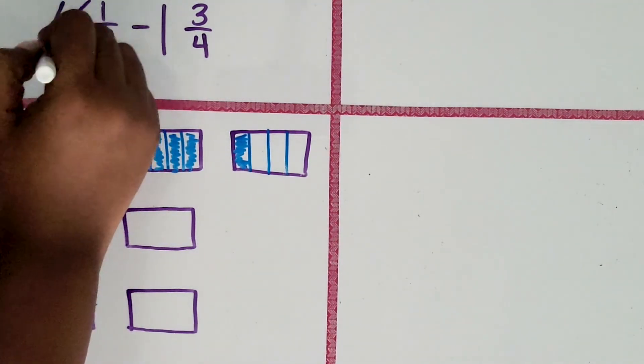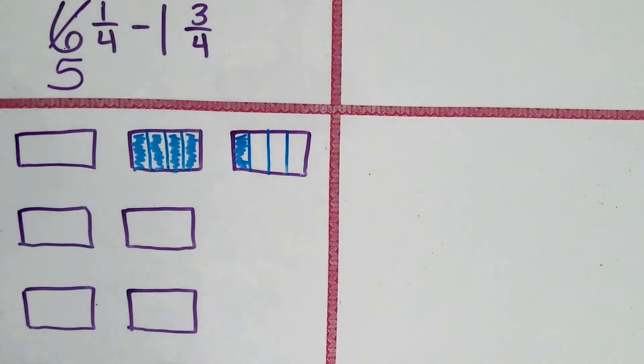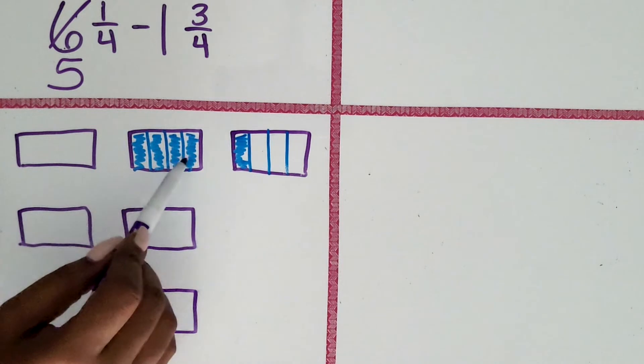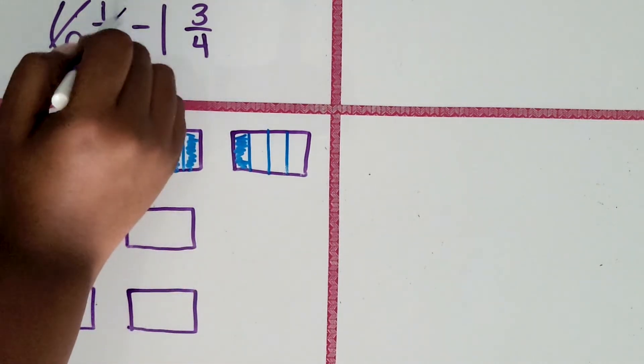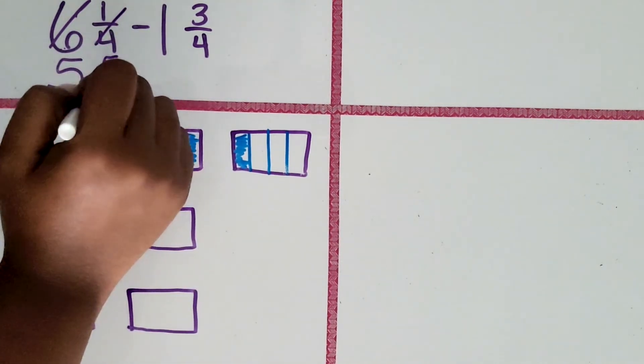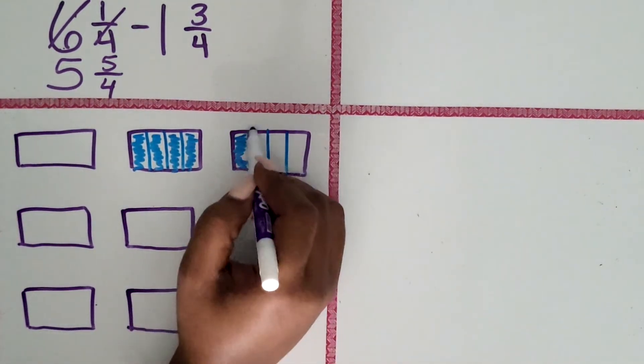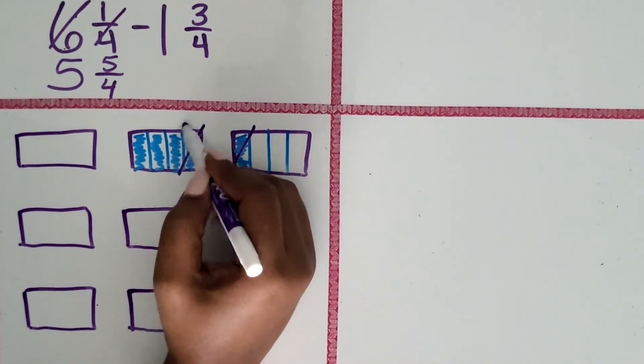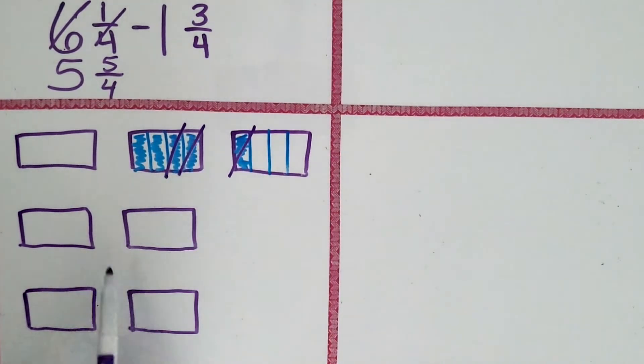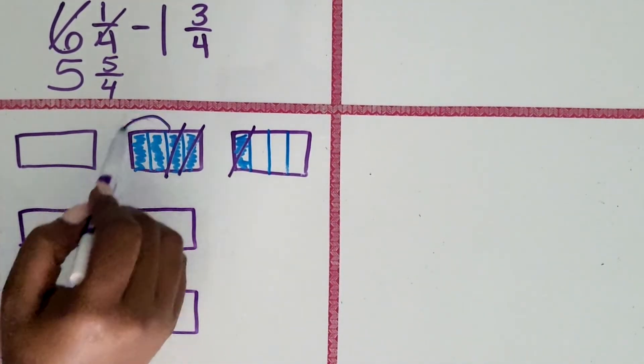Now we have five wholes and not one-fourth anymore. Now we have five of those fourth-sized pieces. But now we can subtract three-fourths. One, two-fourths, three-fourths. How many fourths are remaining? Two-fourths.